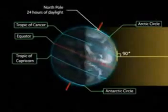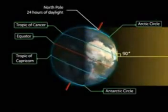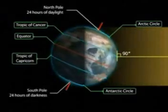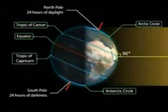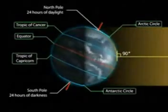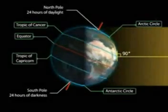Besides, there are 24 hours of daylight at the Arctic Circle, and 24 hours of darkness at the Antarctic Circle.